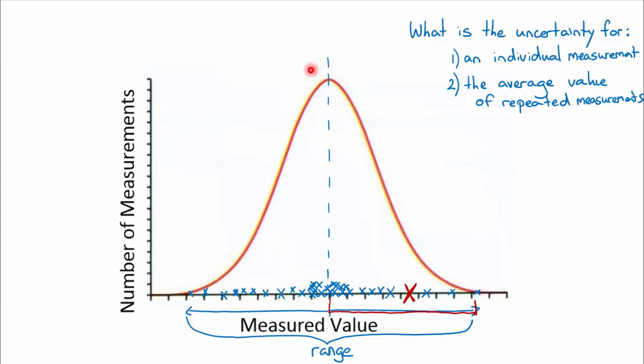So the more measurements you take, the more tightly constrained this average value is. And we'll see how we can quantify that, put a number on that. If we take repeated readings, how we can give a number to the uncertainty of that average.